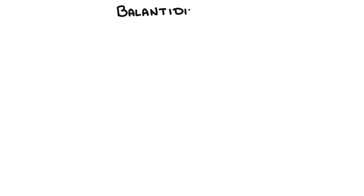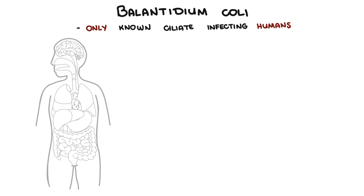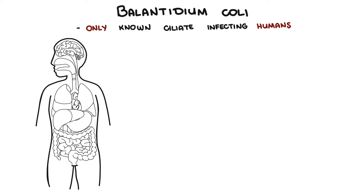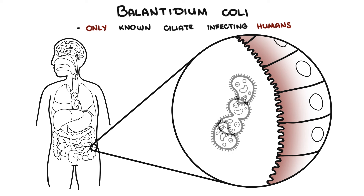An example of a pathogenic ciliate is Balantidium coli. It is the only ciliate known to be capable of infecting humans. It is often associated with swine as the primary reservoir host. The cysts of Balantidium coli are ingested through contaminated food and water, become trophozoites, and colonize the large intestine. They replicate through binary fission and can cause acute or chronic abdominal pain, diarrhea, or dysentery.